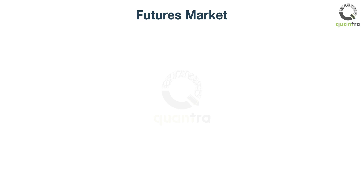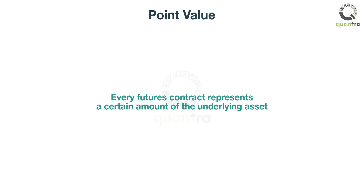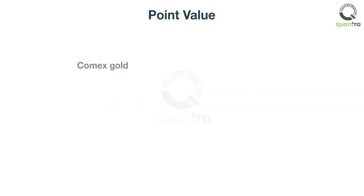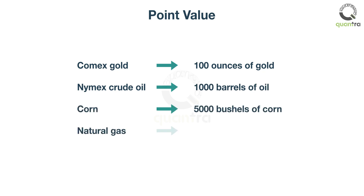The key thing that you absolutely have to know about the futures market you trade is something called the point value. This is sometimes referred to as contract size or multiplier. Every futures contract represents a certain amount of the underlying asset. The COMEX gold contract represents 100 ounces of gold, NYMEX crude oil is 1,000 barrels of oil, corn is 5,000 bushels, and natural gas 10,000 British thermal units.